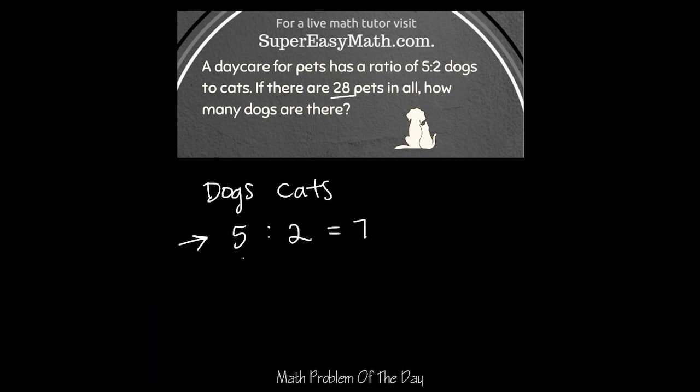So the first thing I'm going to do is double the numbers. The five and two would become 10 and four, and that would total 14.